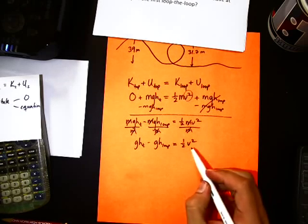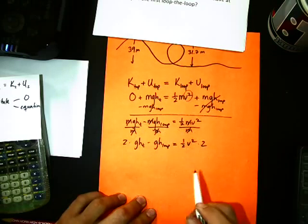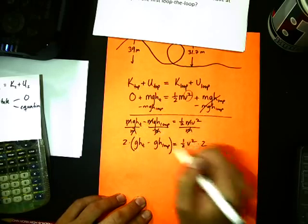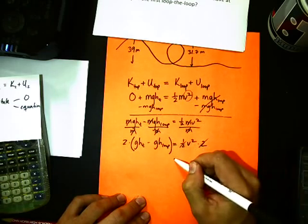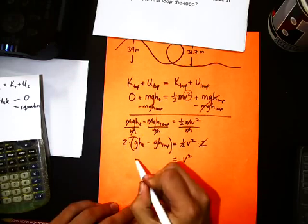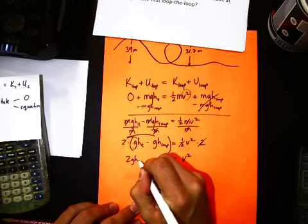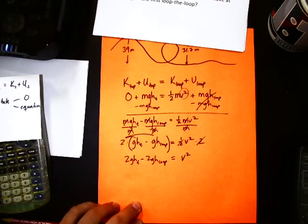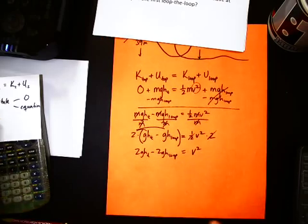And now cancel off that one-half. So multiply both sides by two. And again, careful on your algebra. You don't just multiply one of these by two. You multiply the entire side by two. So if I do a little distribution, two cancels out over here. On the right side, we just have V squared. On the left side, two times that and two times that. So we have 2GH top minus 2GH loop. And then take the square root of that. I'm not going to write that out again.